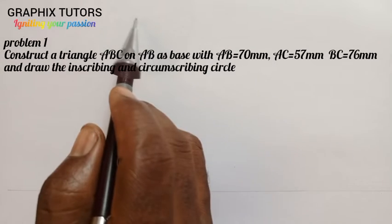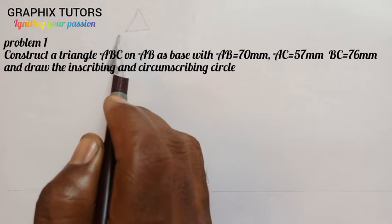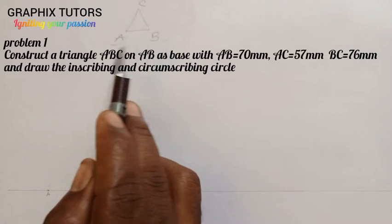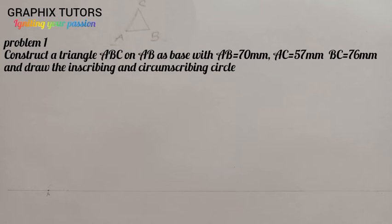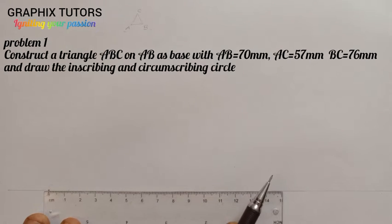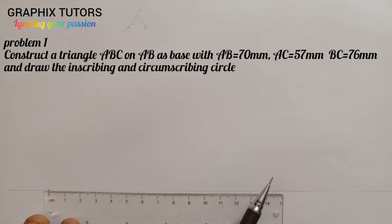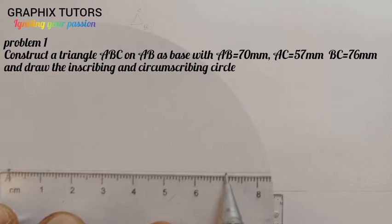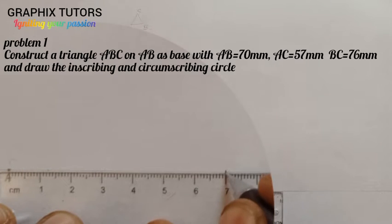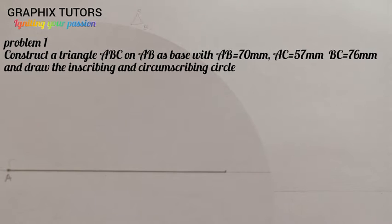When you have a triangle, you have vertices A, B, and C. AB is the base, and A to B is given as 70mm. I'll start from initial point A and put that to be zero, then measure 70mm. So A to B is 70mm.